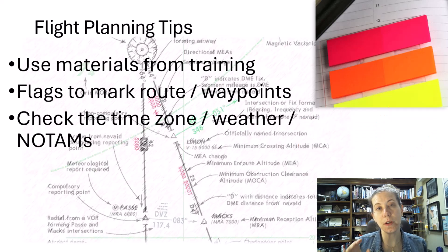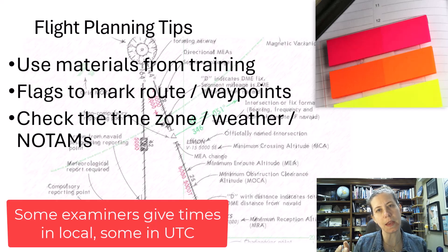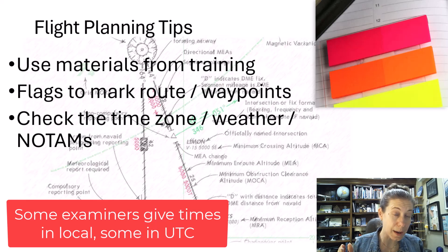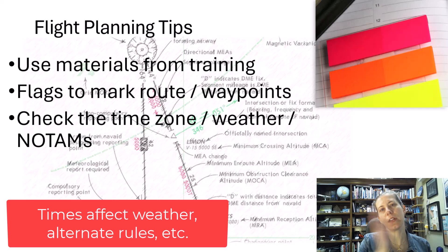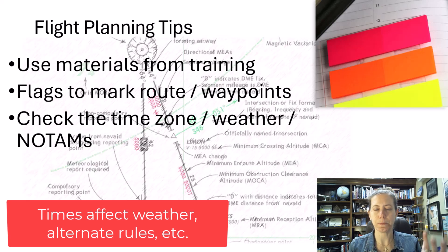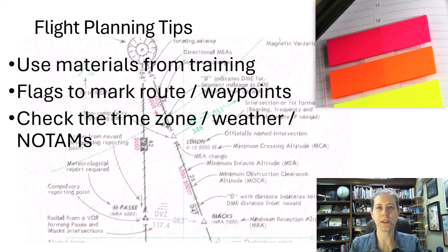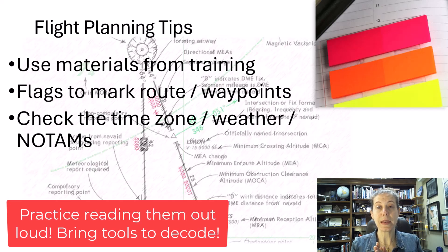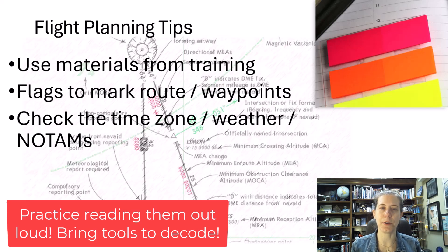Check your time zone. Sometimes the examiner might give you the departure time in UTC, or it could be local time — make sure you know, because that's going to directly affect your weather, which affects whether you need an alternate, fuel requirements, et cetera. Also, be ready to read NOTAMs. One of the things our dispatch examiner emphasizes is being able to read NOTAMs, because it's a big deal. If you have NOTAMs, consider them when doing the flight planning and know how to read them.